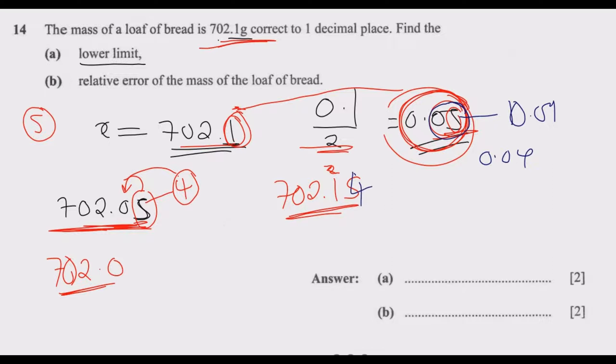So it becomes 702.14, such that if I were to correct to one decimal place, because 4 is less than 5, I'm going to add a 0 here. Then I end up with 702.1.